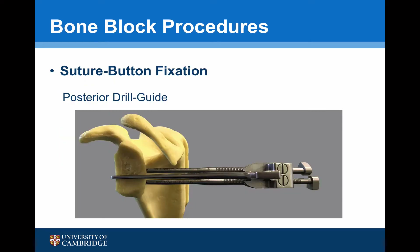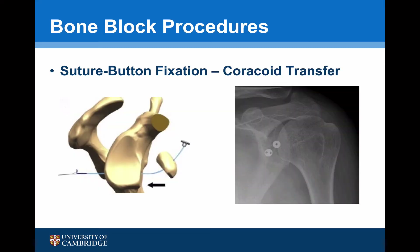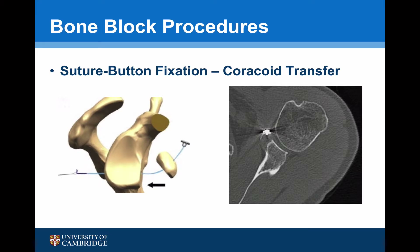A recent development for bone block procedures and coracoid transfers is a suture button fixation technique using a posterior drill guide. Using this system, accurate drill holes can be made from back to front parallel to the glenoid. The bone for the bone block or coracoid transfer can then be securely fixed using a suture button compression system which does not leave any metal work within the glenoid. This is a post-operative X-ray of an arthroscopic Bristow-Latarjet procedure performed using the suture button fixation technique, and the axial CT scan shows that the bone has healed very nicely with no metal work within the glenoid.